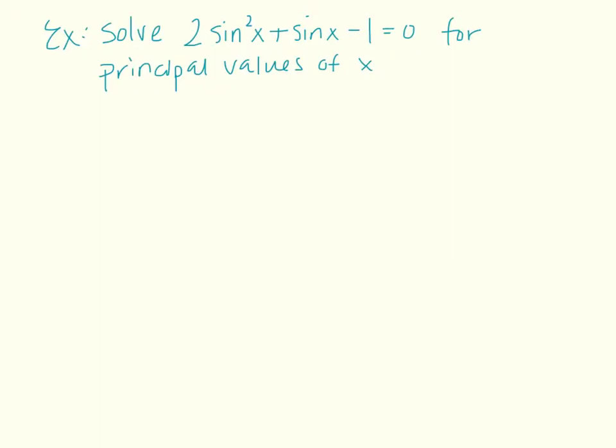So here's an example of how to solve a trig equation. This says solve 2 sine squared x plus sine x minus 1 equals 0 for the principal values of x. So I want to think to myself, this is talking about sine. Sine x, we said, had principal values in quadrant 1 and quadrant 4. So we are going to restrict our values of x within those parameters.